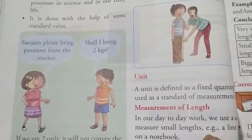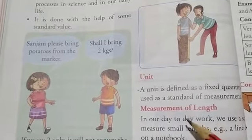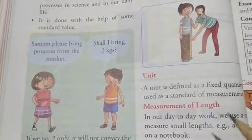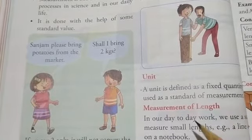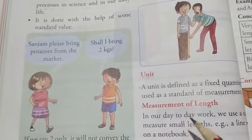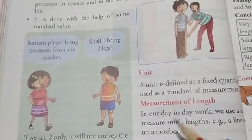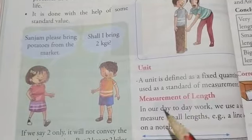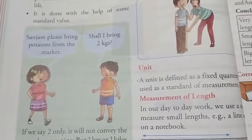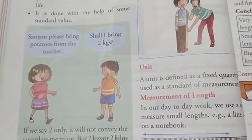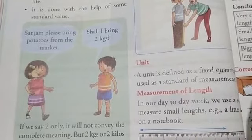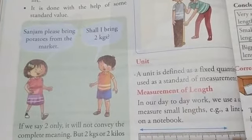For example, whenever we go to market to buy anything like fruits, vegetables, almonds, cashews, then we mention kilograms or grams with the quantity. We don't say 2, 5, 10, 15. We mention kilograms and grams with the quantity or the amount. So the kilograms or the grams are the units. These are the fixed quantities that are defined as units.